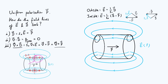To understand this physically: the polarization causes positive charges to accumulate on the right-hand face and negative charges on the left-hand face, producing a bound surface charge density. The magnitude of that bound surface charge density equals the magnitude of the polarization vector P — there's another video deriving that result if you want to see why.